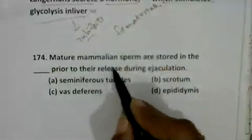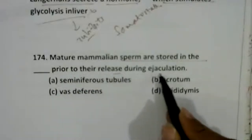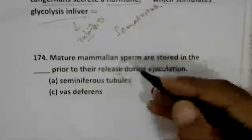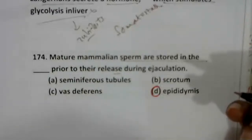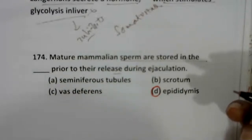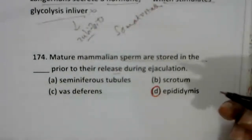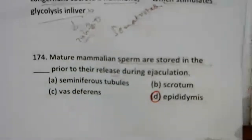Mature mammalian sperms are stored in the epididymis prior to release during ejaculation. The scrotum maintains the temperature of the testis below body temperature by 1.5 to 2 degrees Celsius. The vas deferens is involved in transportation of sperm cells.